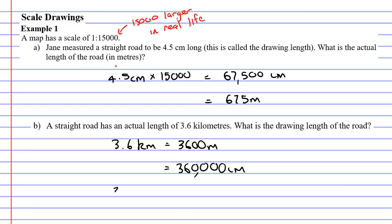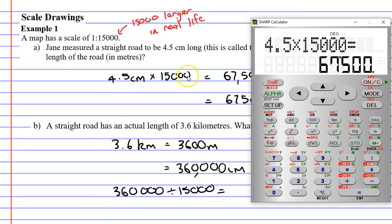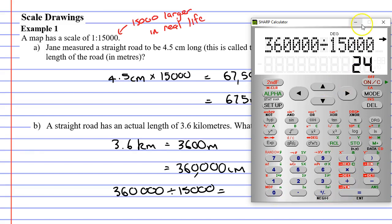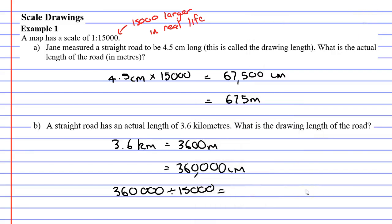Now, to make it 15,000 times smaller, what we do is we divide this time. We divide by 15,000 and see what we get when we do that. So, 360,000 divided by 15,000 equals, and we get 24, 24 centimeters.